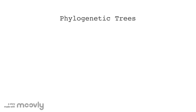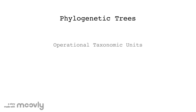Phylogenetic trees are diagrams that represent the evolutionary relationships between a group of organisms. These relationships are determined by the differences in operational taxonomic units, or OTUs, which are based on differences in their DNA.